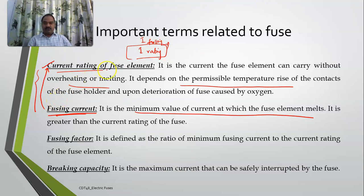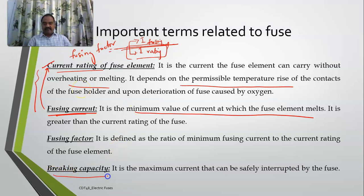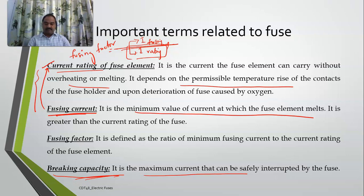The ratio of fusing current to the current rating of the element is called the fusing factor. There is also one more term called breaking capacity, which is the maximum current that can be safely interrupted by the fuse without burning out. To summarize: current rating is the current a fuse element can carry without melting; fusing current is the minimum value at which melting starts; their ratio is the fusing factor.